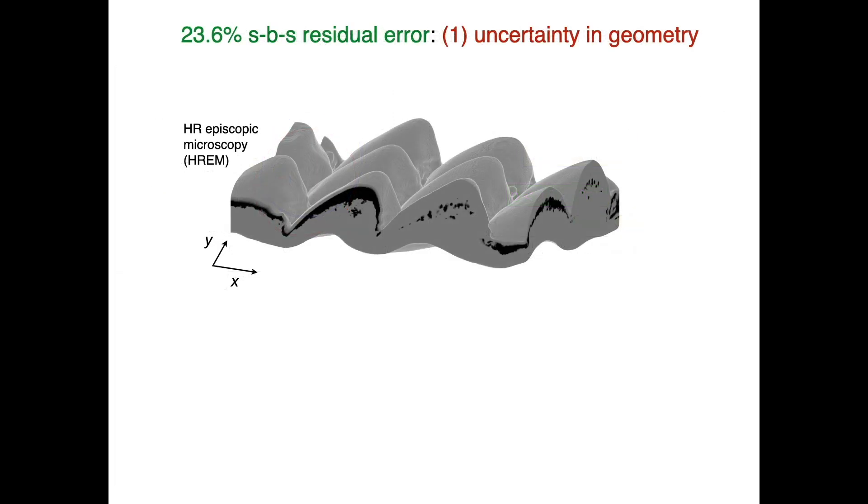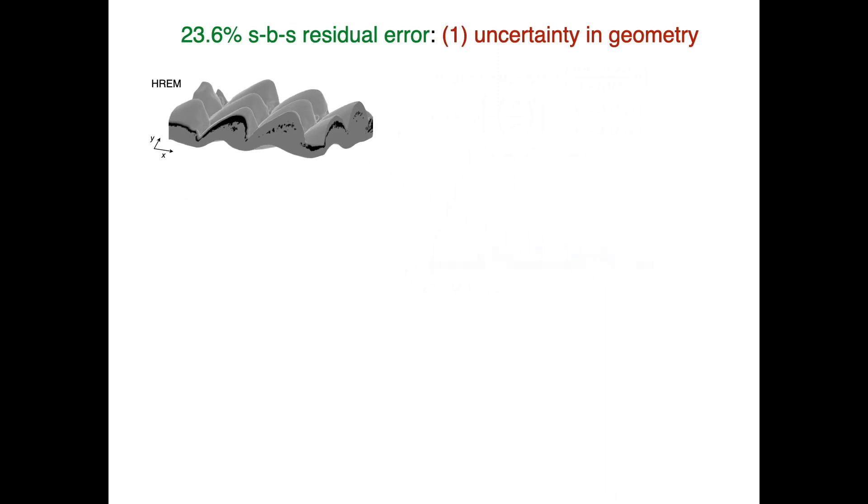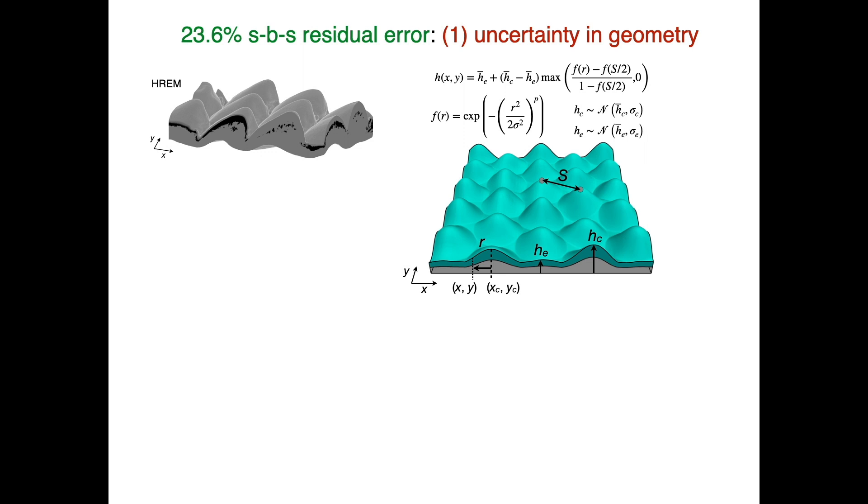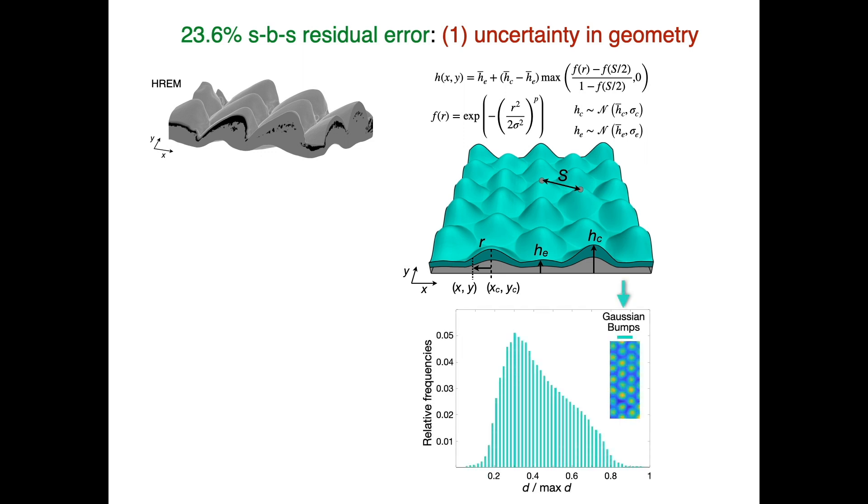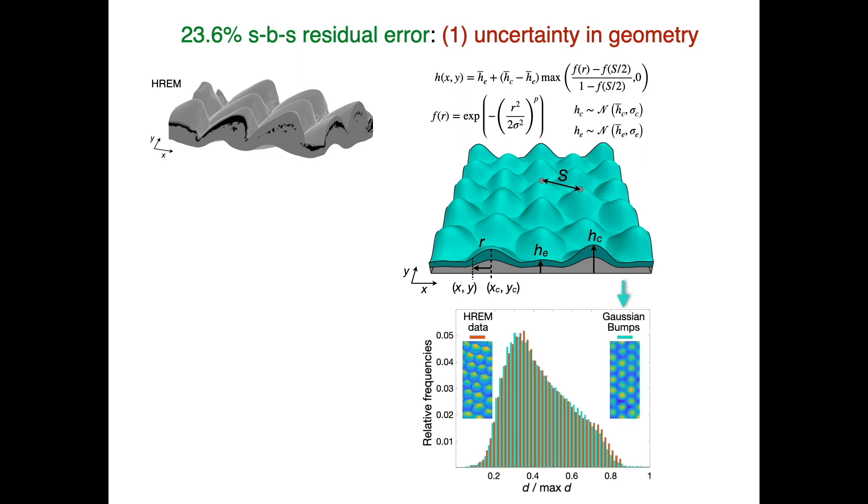First, we reconstruct a 3D patch of oscillated lizard skin using episcopic microscopy, and construct 1,000 noisy domains that each exhibit the observed thickness heterogeneity.